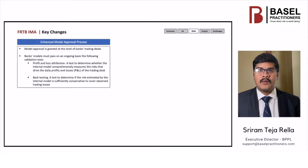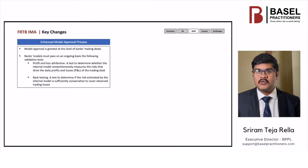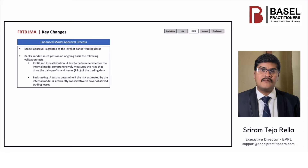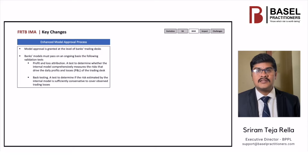Enhanced model approval process. Under the revised framework, model approval is granted at the trading desk level. A trading desk internal model must pass two tests. Profit and loss attribution is a test to determine whether the internal model comprehensively measures the risks that drive the daily profits and losses of the trading desk. Backtesting is a test to determine if the risk estimated by the internal model is sufficiently conservative to cover observed trading losses.